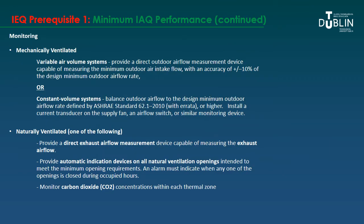The second part of the prerequisite covers monitoring, which is related to the construction phase. For mechanically ventilated variable air volume systems, you need a direct outdoor airflow measurement device measuring particular flows with specified accuracies. For constant volume systems, you balance the outdoor airflow to the design minimum per ASHRAE or install a current transducer on the supply fan. For naturally ventilated buildings, you provide a direct exhaust airflow measurement device, an automatic indication device on openings, or CO2 monitoring.